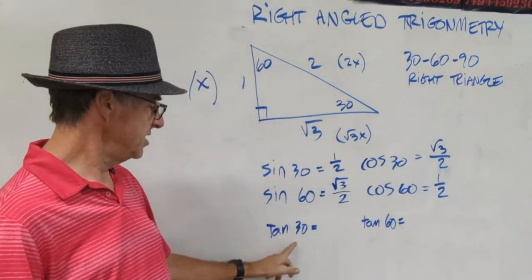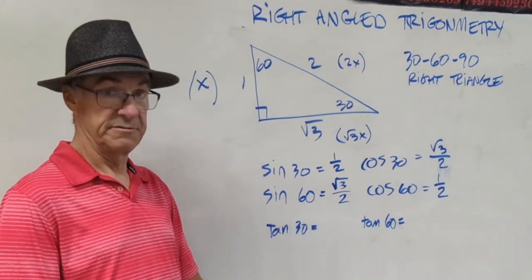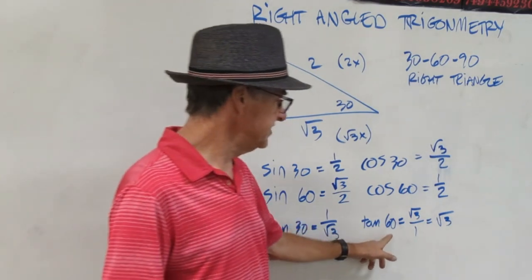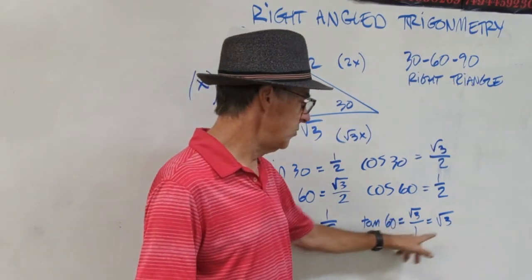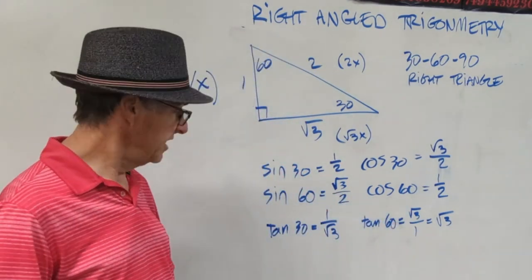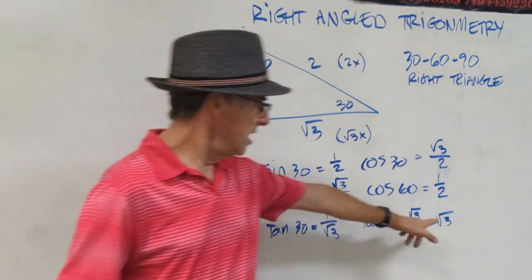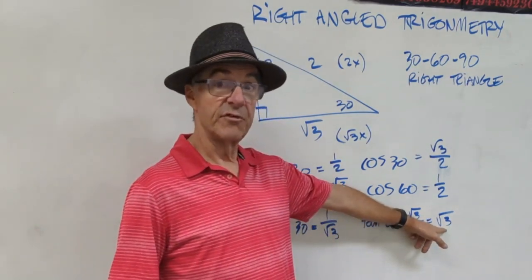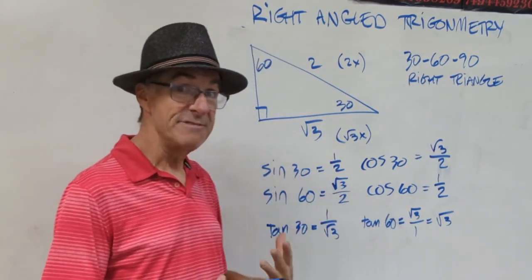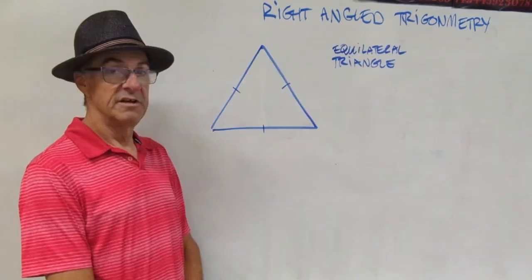Pause the video and write down the ratios for tan 30 and tan 60. Tan 30 is 1 over root 3, and tan 60 is root 3 over 1, which is just root 3. If you find the decimal for root 3 on your calculator, that's the same decimal you'll get if you do tangent of 60.